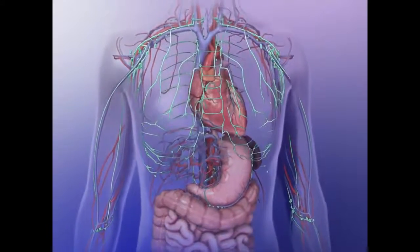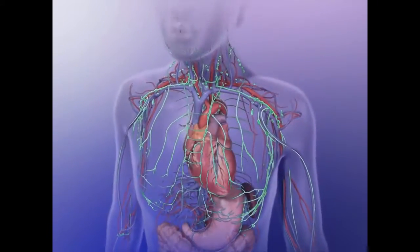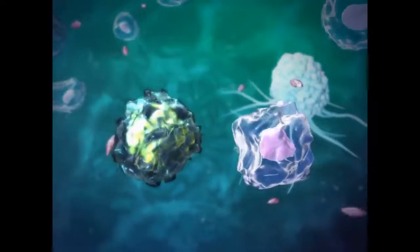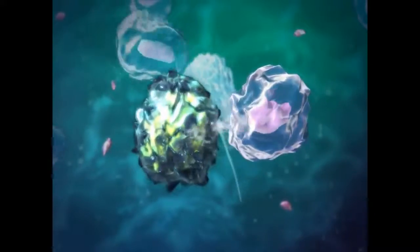Groups of lymph nodes are located at the axilla, groin, neck, and in the intestinal region. The nodes are filled with lymphocytes, the body's defense cells. These cells support immunity by eliminating pathogens that can cause infections.